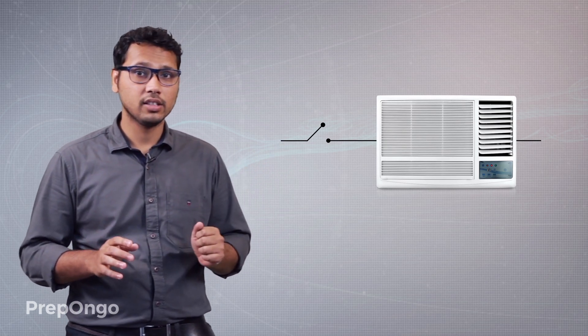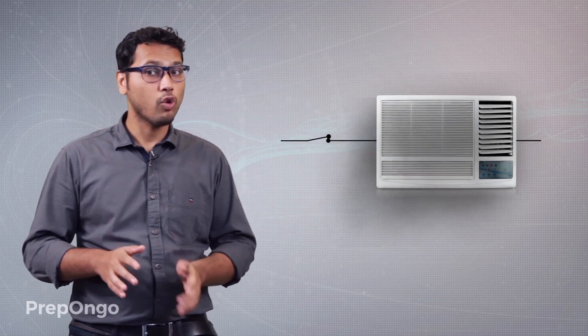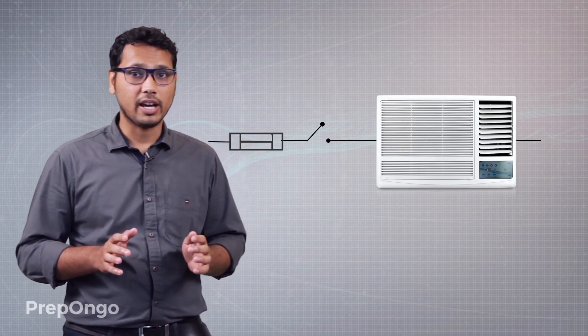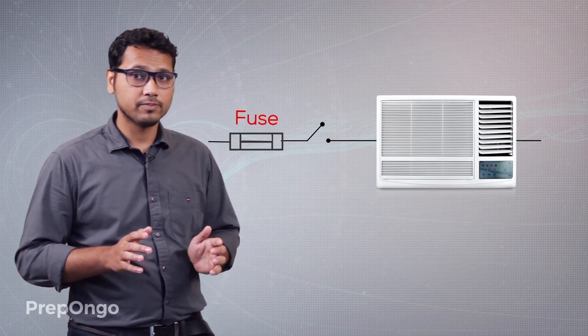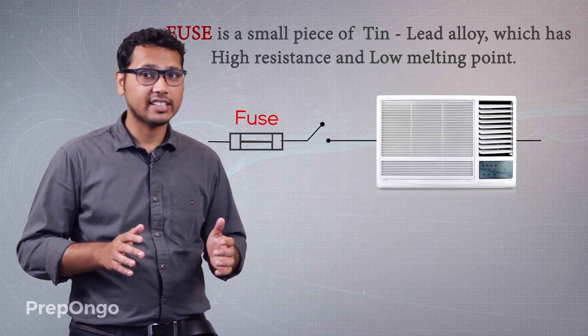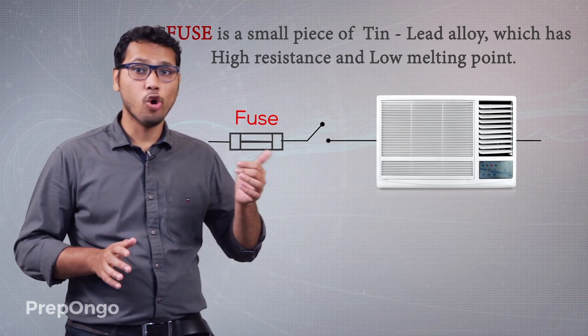Now for the safety of the appliance, one more precaution is applied to the electrical supply. Suppose that there is an overloading or a short circuit which causes a huge amount of current to flow through the appliance. In this case when huge amount of current is flowing through the appliance, the appliance can get damaged. So to avoid this damage one small thing is applied to the electrical supply. This is known as a fuse. Fuse is nothing but a small piece of wire made up of tin and lead alloy which has high resistance and low melting point.